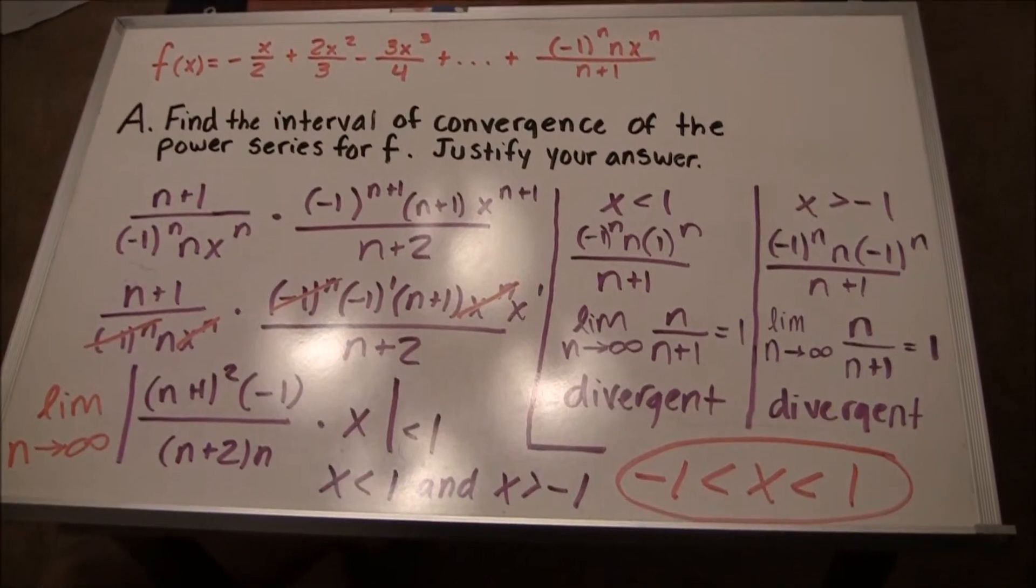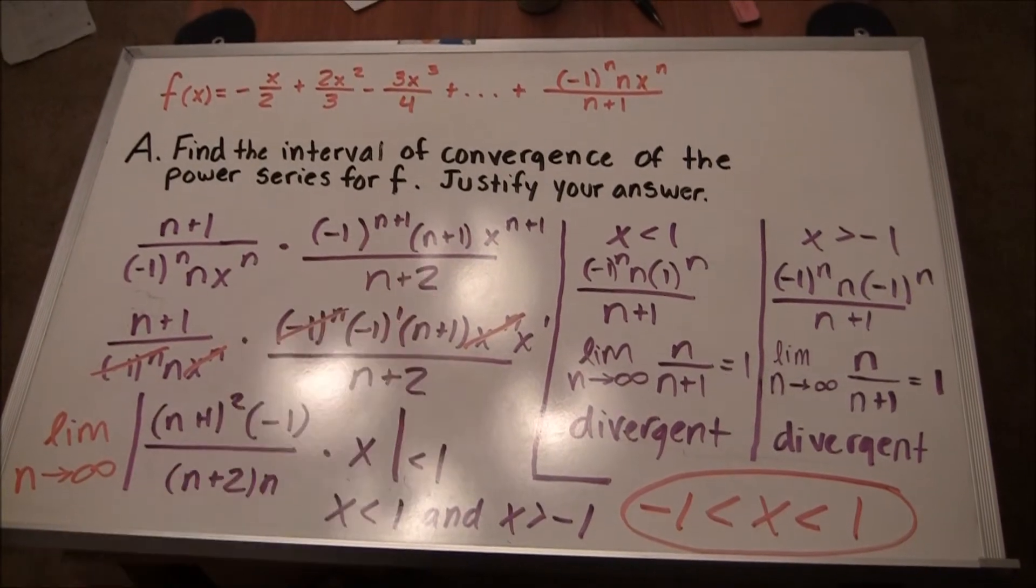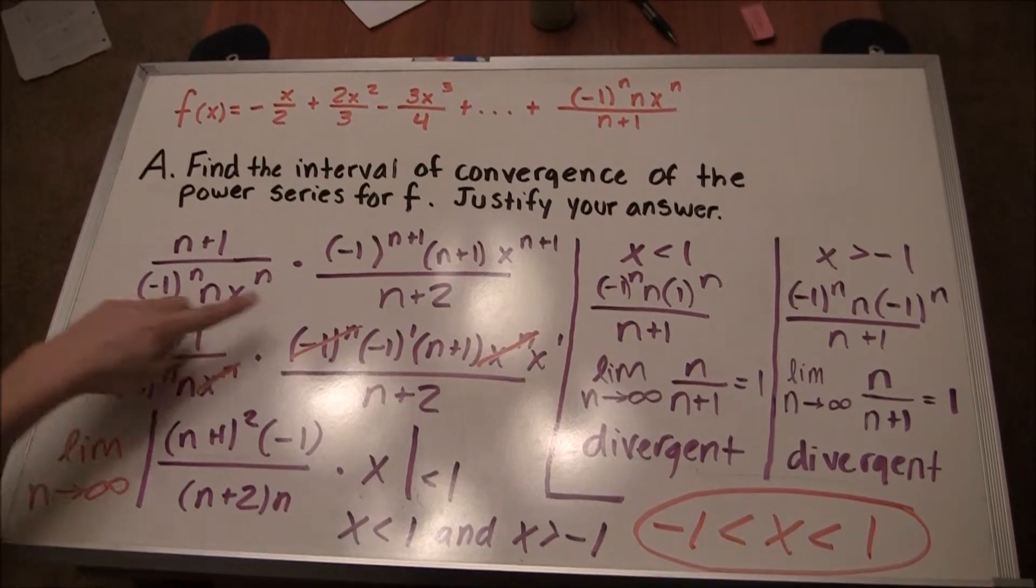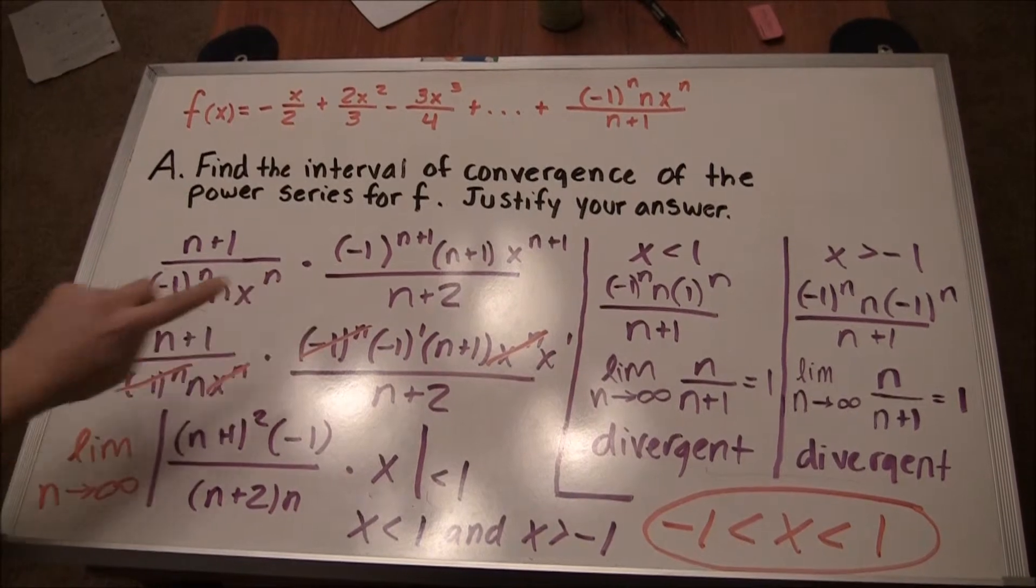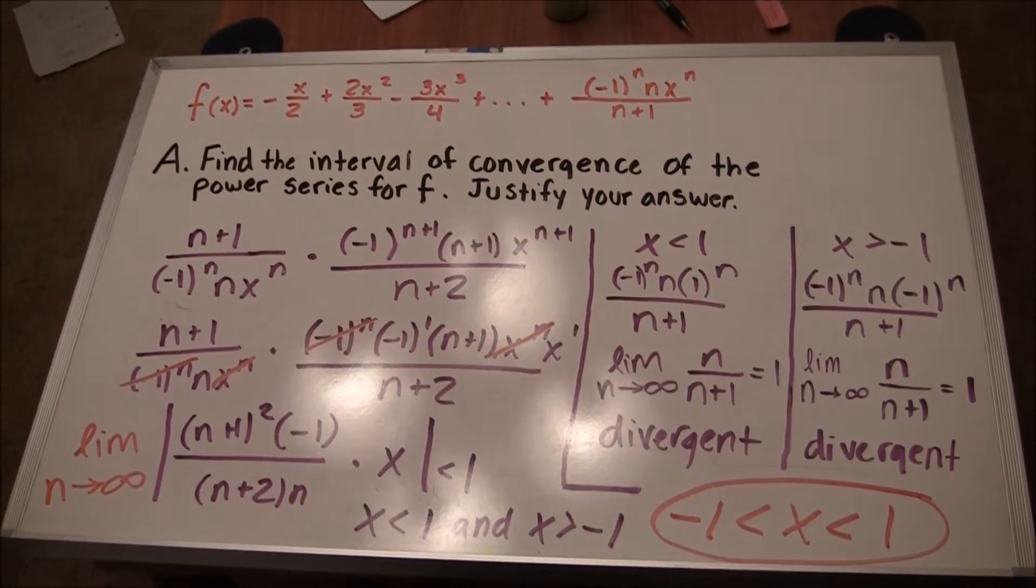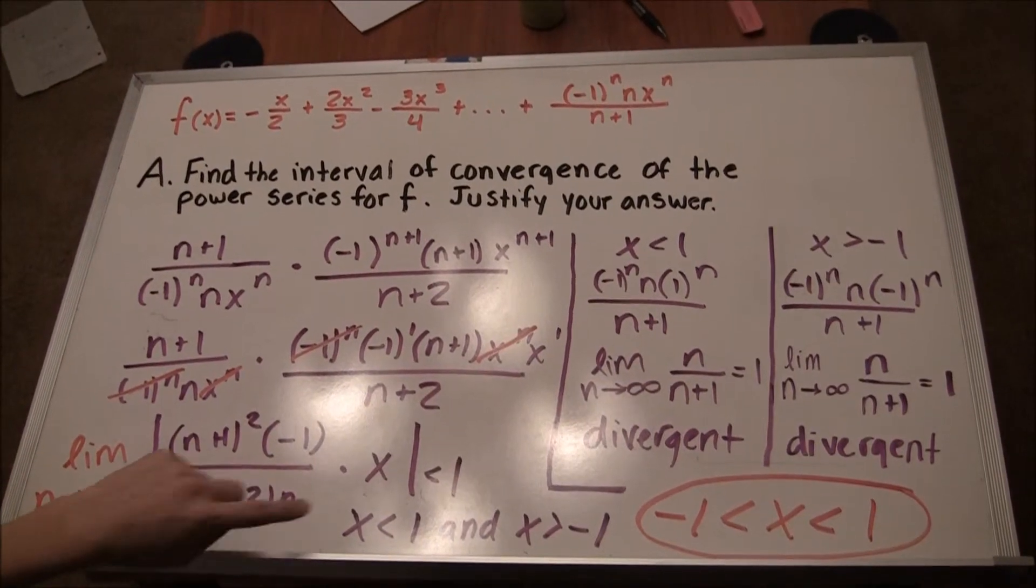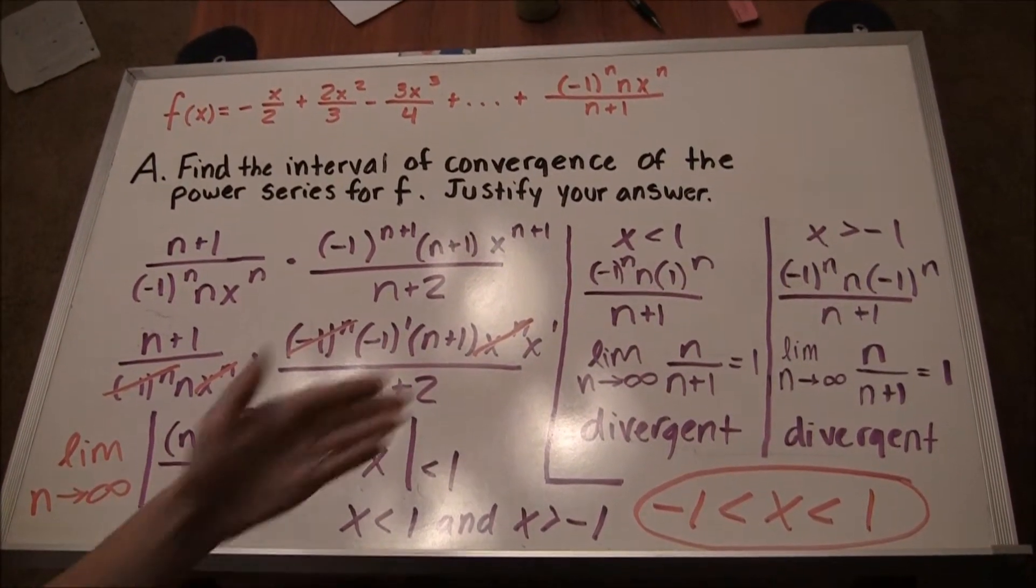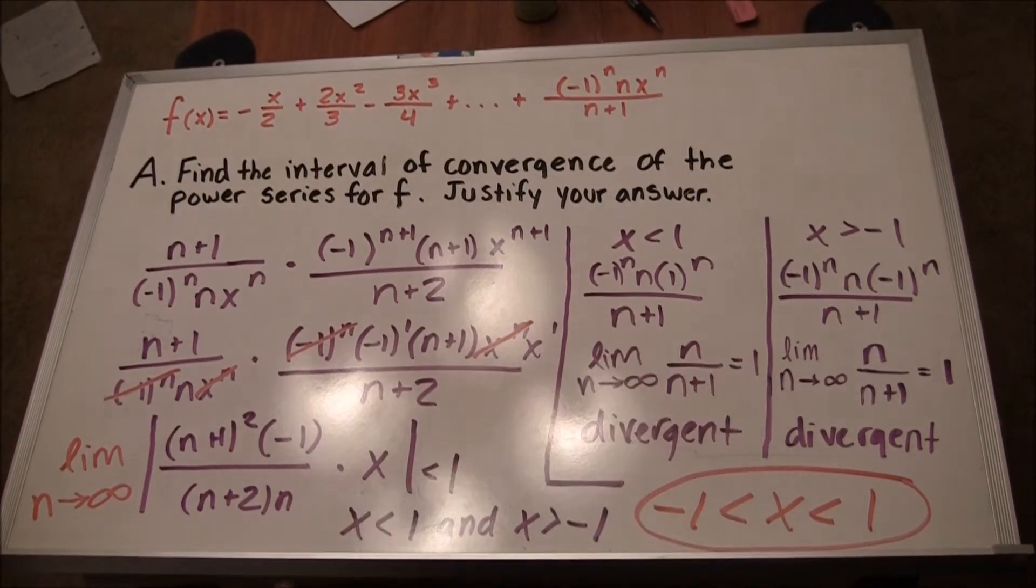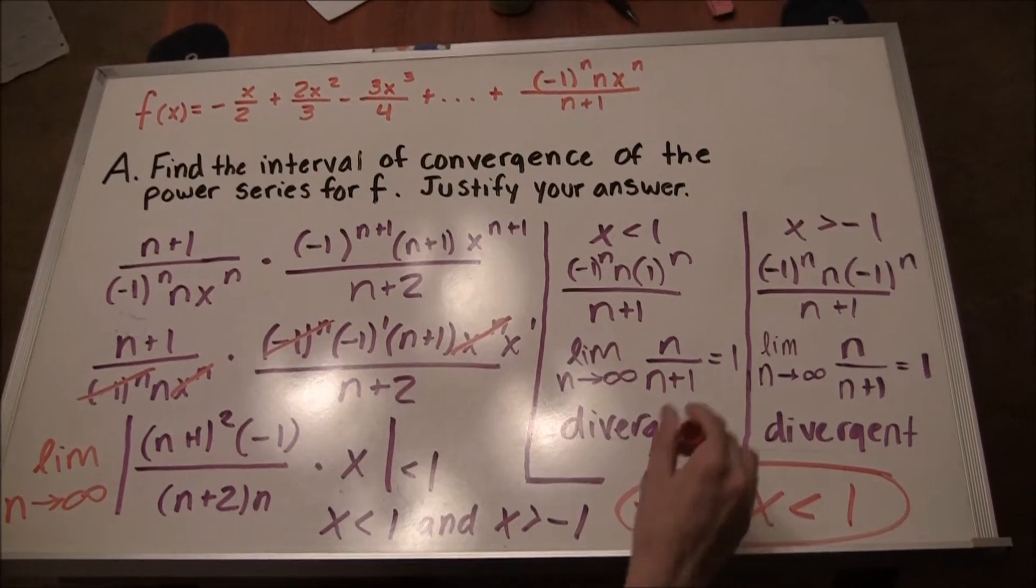There are five points to this question. The first is when you set up a ratio. The second, when you compute the limit of the ratio. The third, identifying the radius of convergence. The fourth, considering both endpoints. And the fifth, providing a proper analysis for both endpoints.